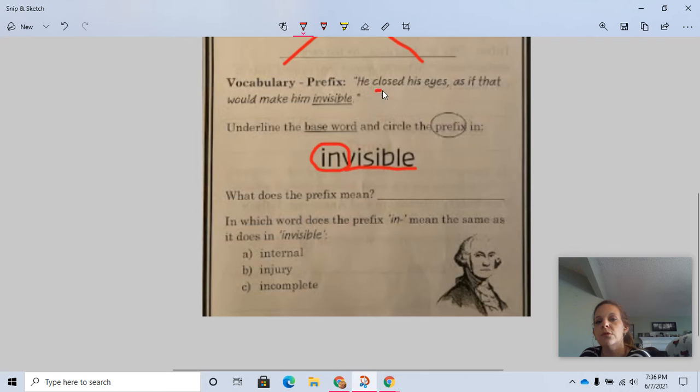If he closed his eyes as if that would make him invisible, what was he trying to do? Now think of what that means compared to what visible meant. And what do you think the prefix 'in' means? Write your answer on the line.